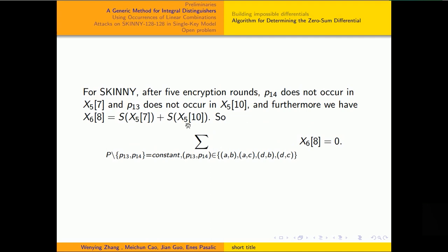For SKINNY, after 5 encryption rounds, P14 doesn't occur in the 7th word of X5 and P13 doesn't occur in the 10th word of X5. First of all, we have this formula. So, the sum of this word over four plaintexts formed as P13 and P14 with the other words being constant equals zero.